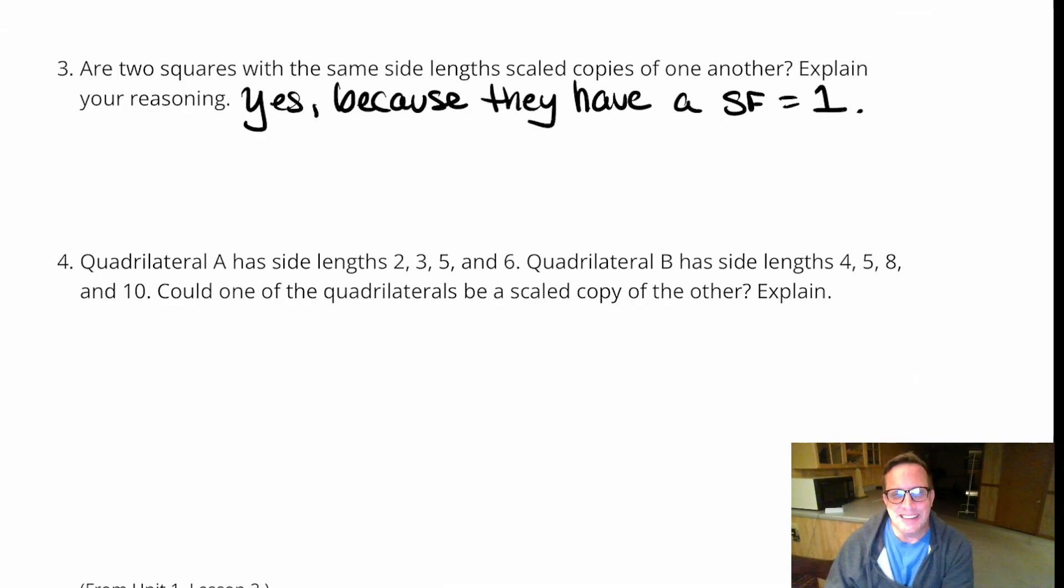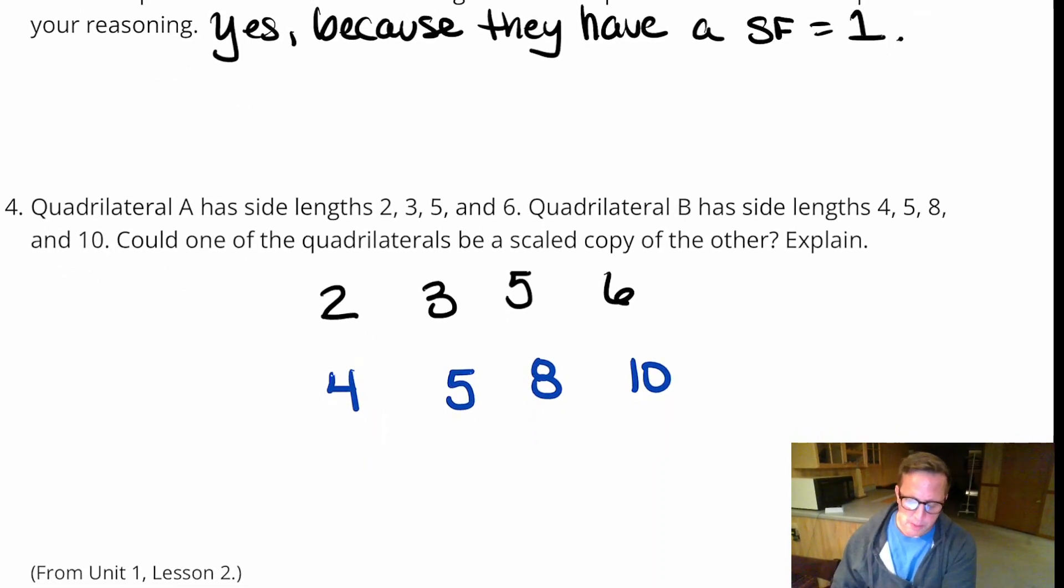For number 4, quadrilateral A has side lengths 2, 3, 5, and 6. Quadrilateral B has side lengths 4, 5, 8, and 10. Could one of the quadrilaterals be scaled copies of the other? Now what I'm going to do is just line this up so we can see. We've got 2, 3, 5, and 6, and then the scaled copy equivalent is going to be 4, 5, 8, and 10. Now if I just look at the first set of numbers, you've got a 2 and a 4 right there. That's a scale factor of 2. So does that work for the other numbers? No, it does not. 3 times 2 is 6. So that's not a scaled copy. 5 times 2 is 10, so maybe I'm supposed to go with that, but this one doesn't work either. So this is not scaled.